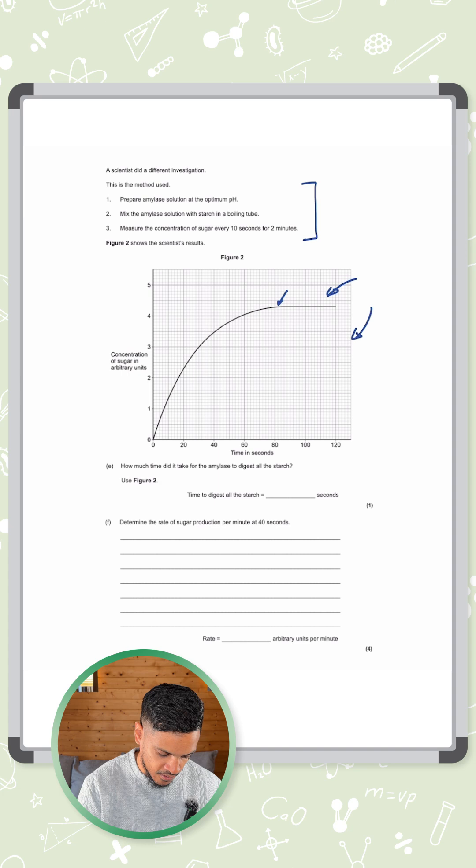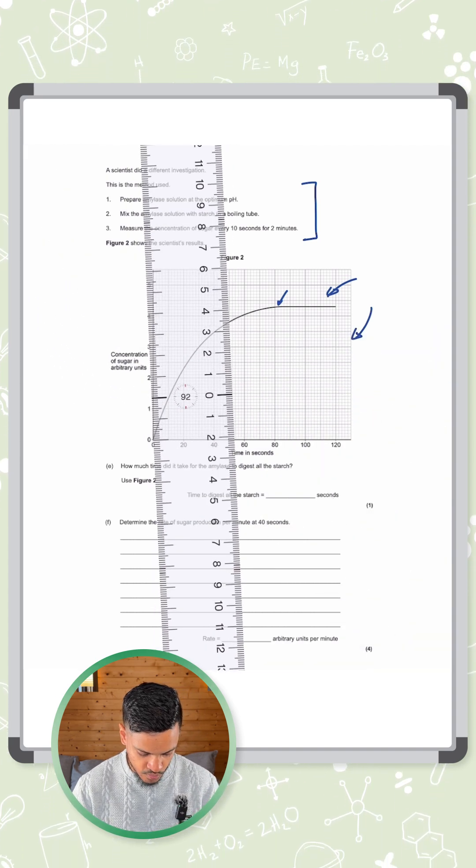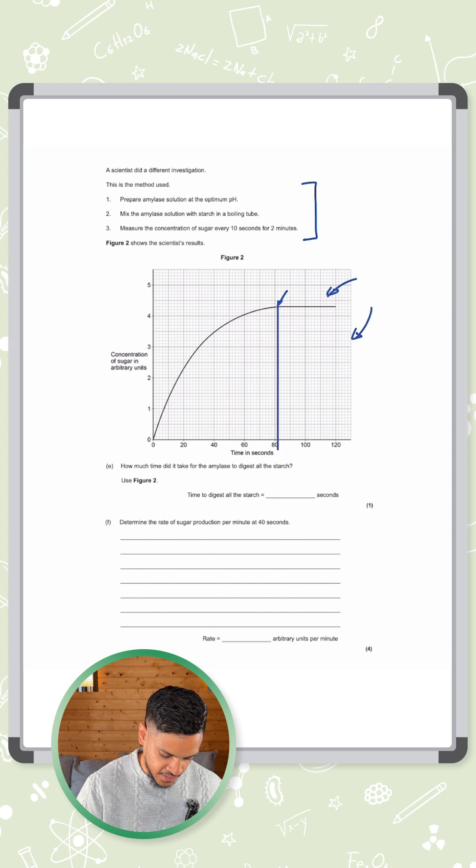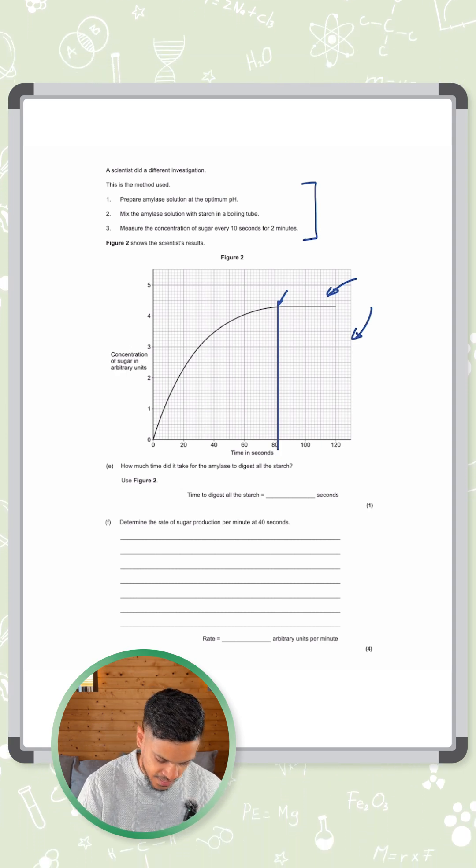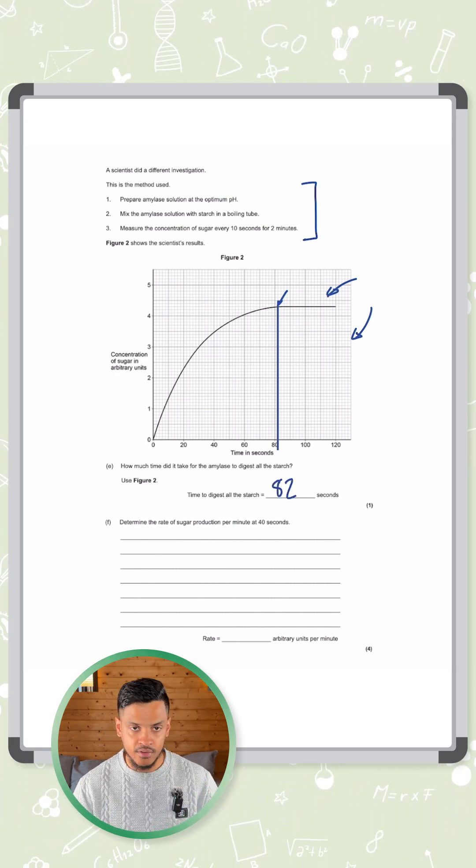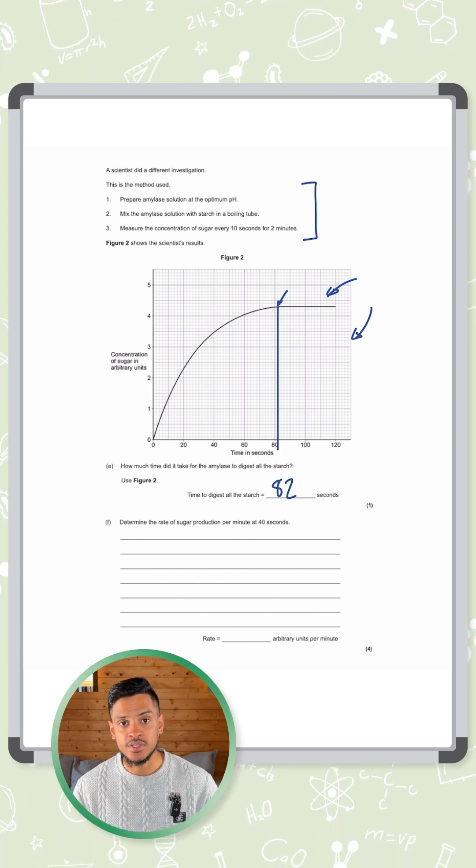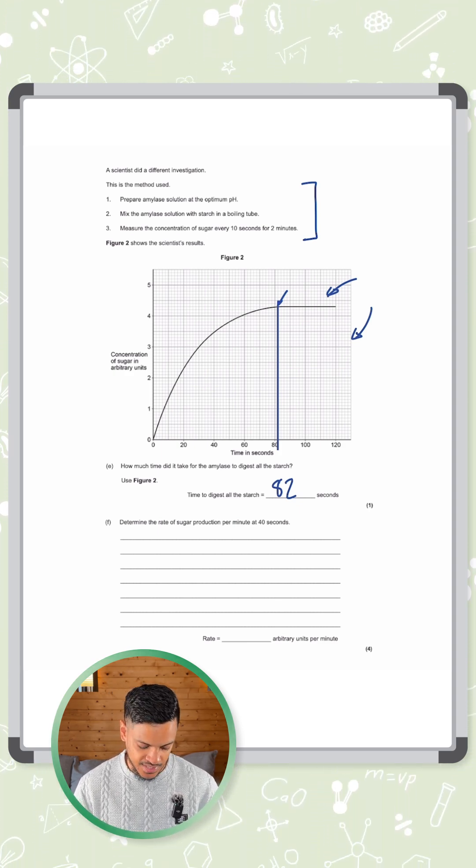So you need to read that off. I would try and use a ruler to make sure you read it off. Draw a line, and if you read that carefully, that's around 82 seconds. It's just one square to the right of the 80. Ten squares is 20, so that means one square is 2. So that's 82 seconds.